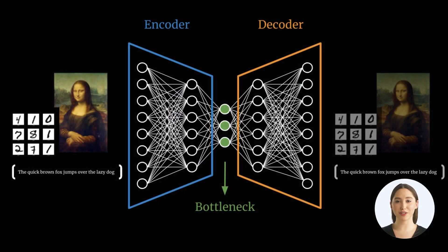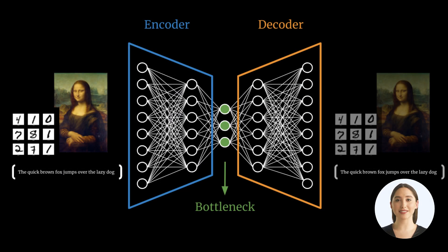Autoencoders are useful for a variety of tasks such as image compression, anomaly detection, and data denoising. They can also be used to extract features from data that can then be used for supervised learning tasks such as classification and regression.